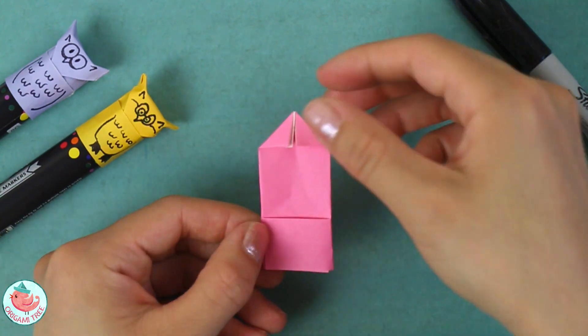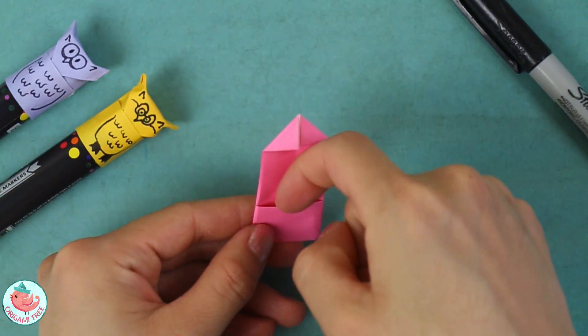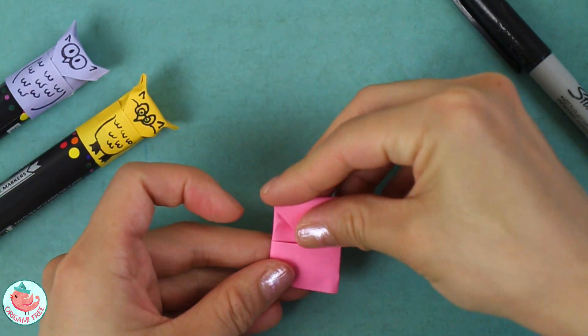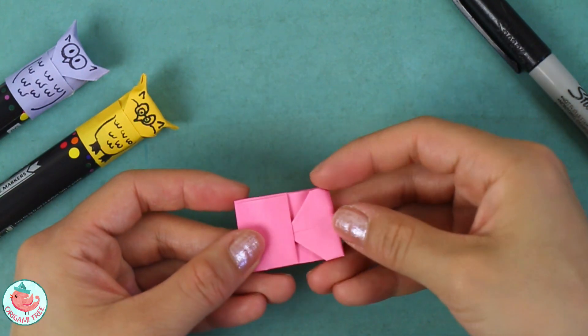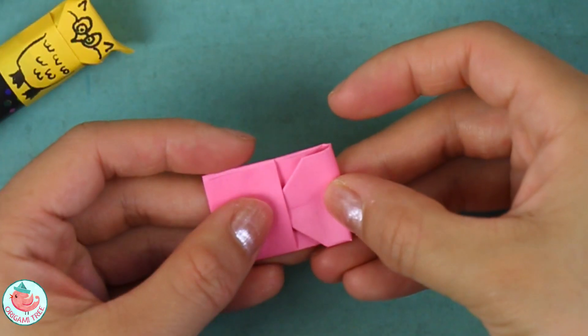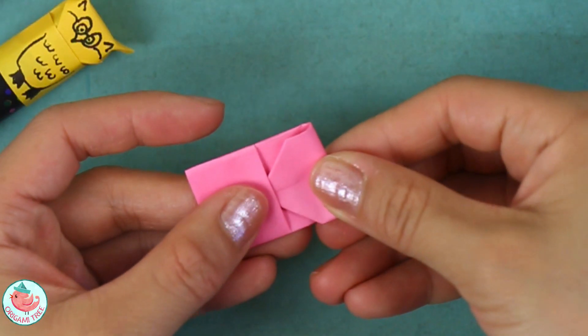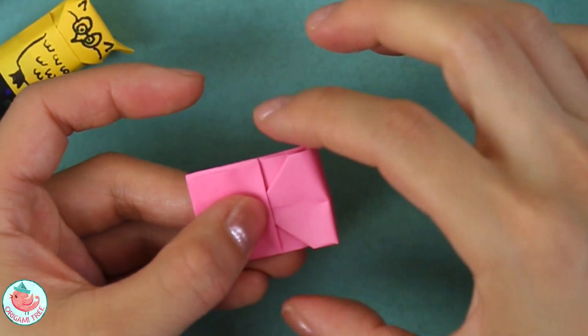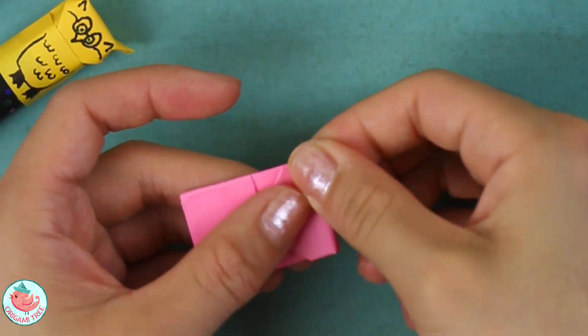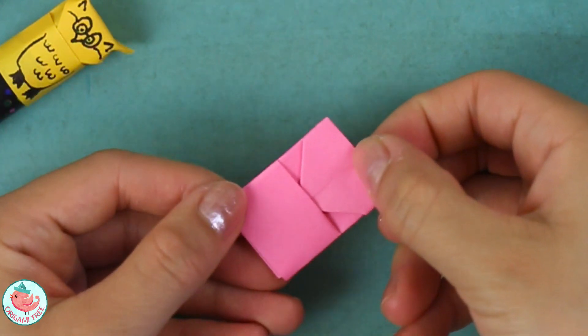Now you're going to take that tip and slip it into that slot. Fold it down, stick the tip into this opening right here. Leave a little bit of space so you have some room for the head and then crease that in.